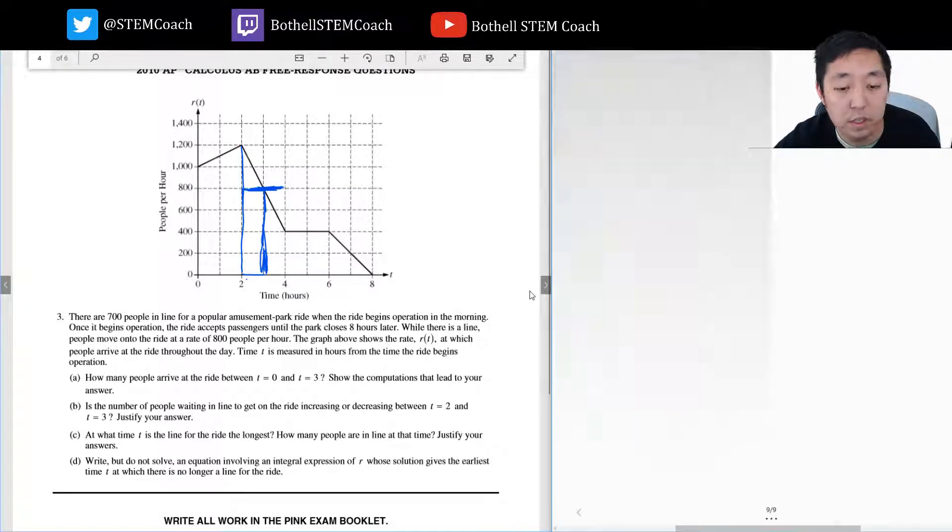Write, but do not solve, an equation involving integral expression of R whose solution gives the earliest time T at which there's no longer a line for the ride. It's when the number of people is zero. So my integral of zero to T of R of T minus eight hundred dT equals zero. Let's be precise on notation, dT equals zero. So that's the last part.